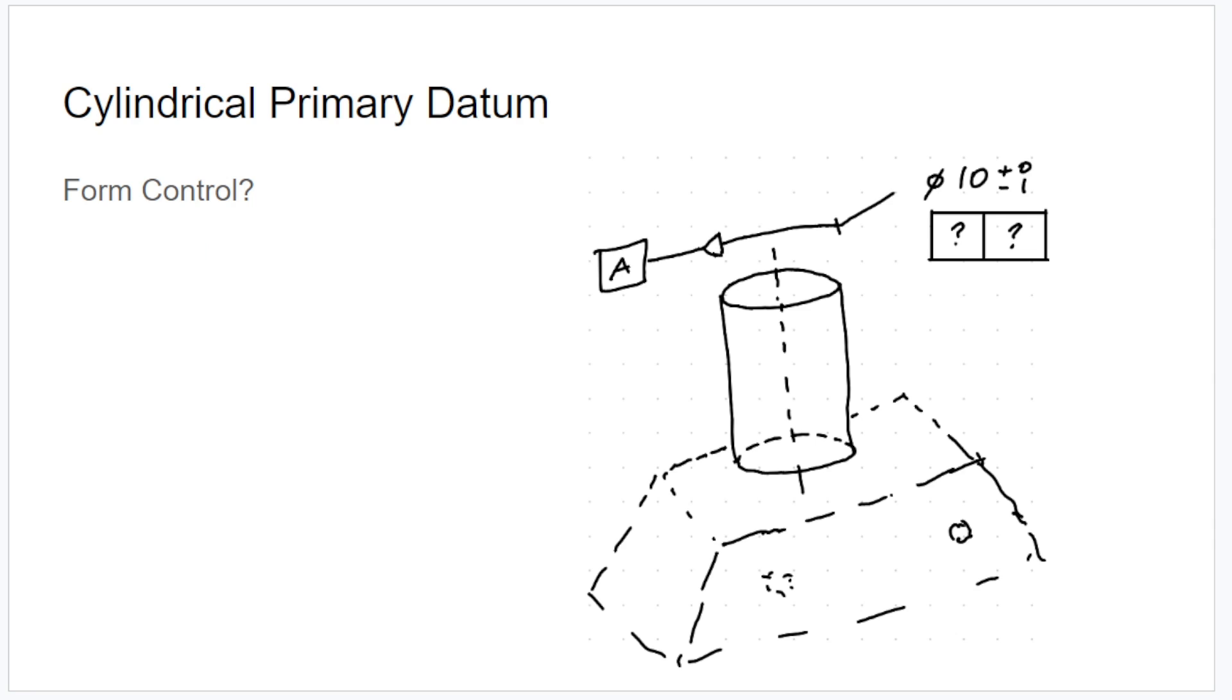So what are some ways that one might choose to control the form of a cylindrical primary datum? Well, the first one you should always think of is classic rule number one, the envelope rule, size controls form. It's forgiving. Everyone should use this where they can.